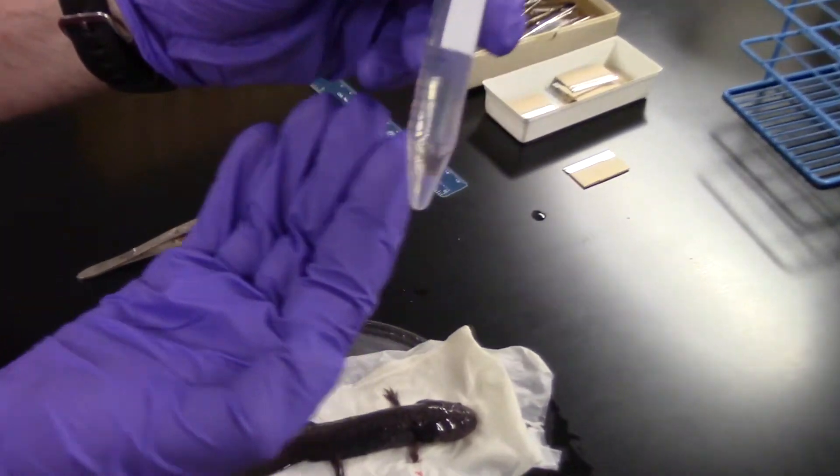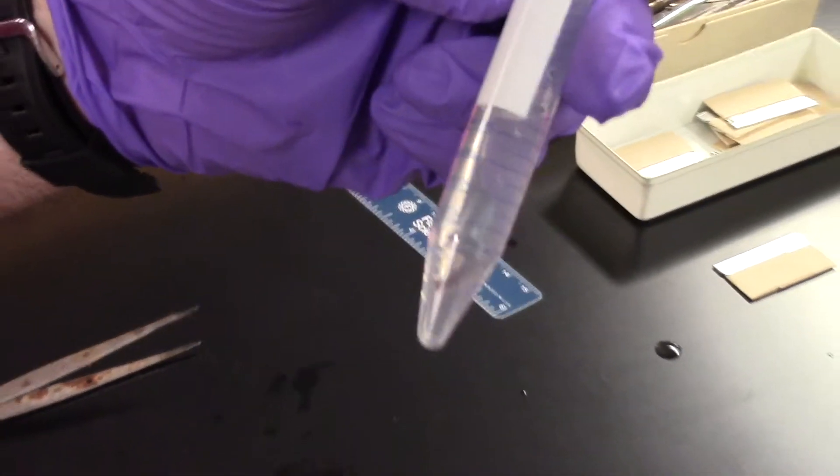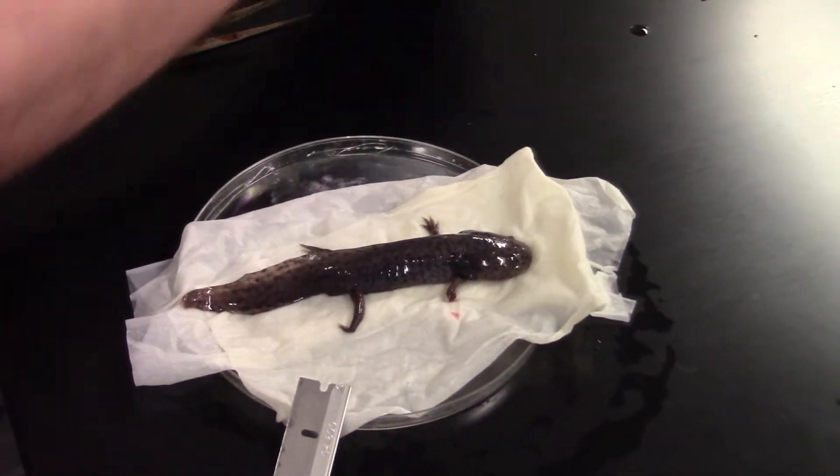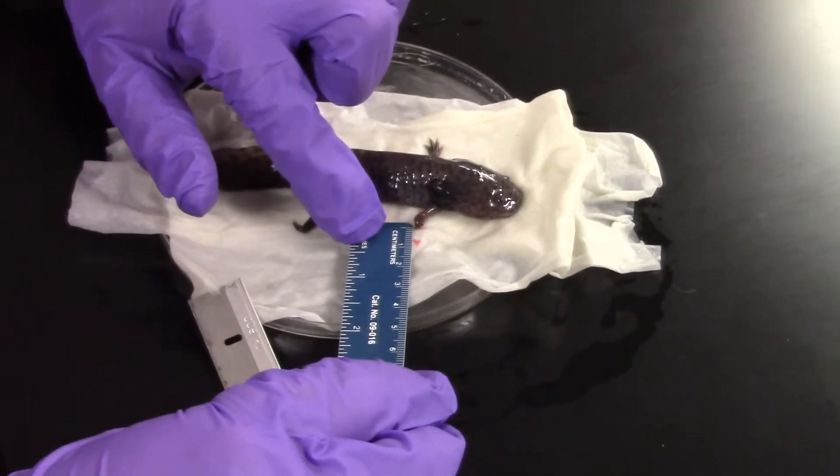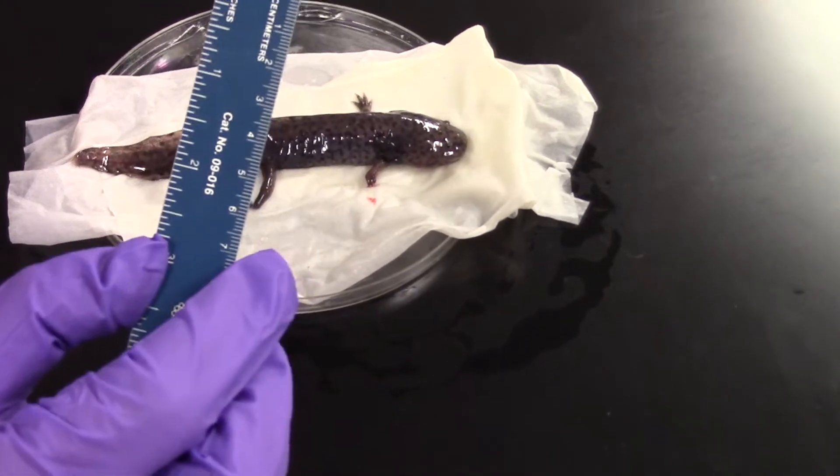So here we've got our limb with all the digits splayed out. Notice the animal still has not moved. It is completely anesthetized. Some of the things that we would want to do in a regeneration experiment is measure how much we removed. How long was the region that we removed?